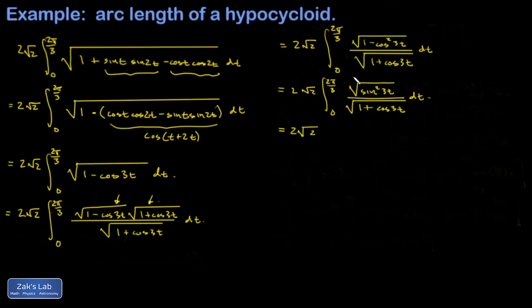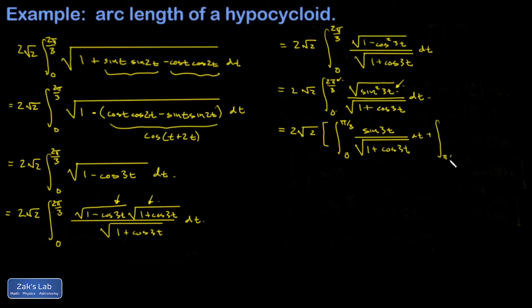We need to determine where sin(3t) is positive or negative on [0, 2π/3]. As t goes from 0 to 2π/3, the argument 3t goes from 0 to 2π — spending half its time positive and half negative. We split the interval at π/3. On [0, π/3], sin(3t) is positive, so |sin(3t)| = sin(3t). On [π/3, 2π/3], sin(3t) is negative, so |sin(3t)| = −sin(3t). The two resulting integrals differ only by a minus sign.